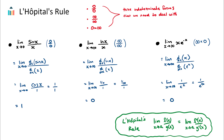Let's try and solve three examples without even knowing what L'Hopital's rule is. The limit as x approaches zero of sine of x over x — let's substitute in zero for x and we get sine of zero over zero. Sine of zero is in fact zero, so we get zero over zero. That's a little bit of a strange answer.